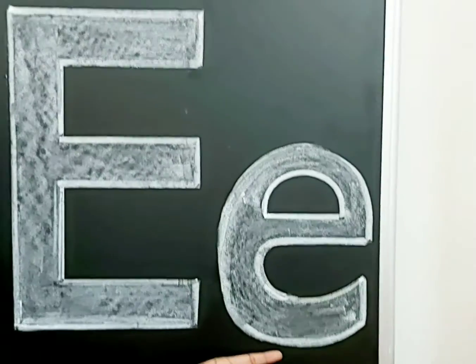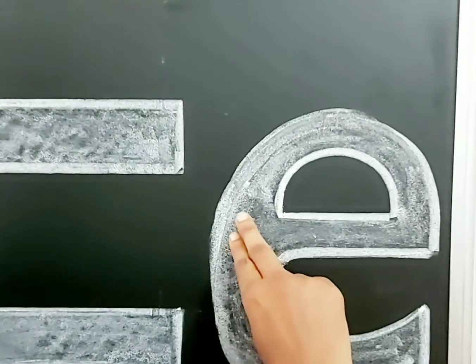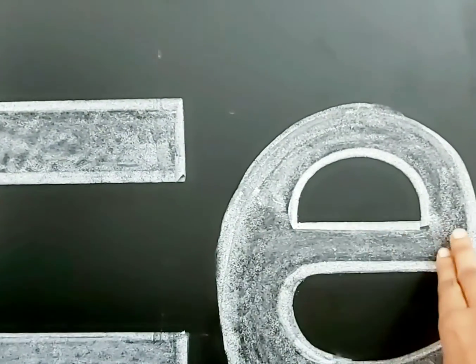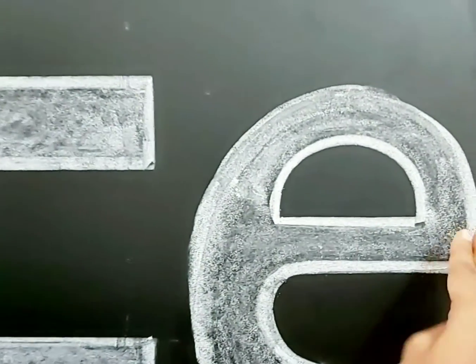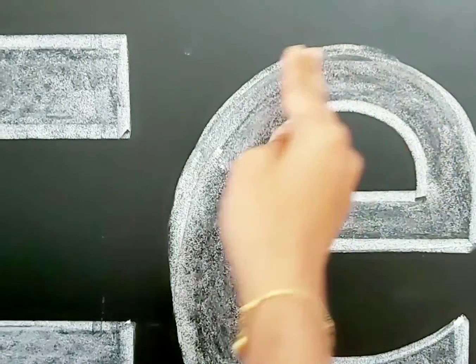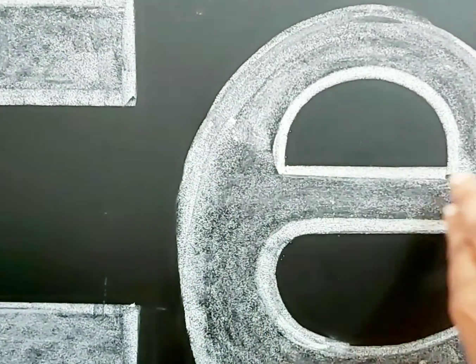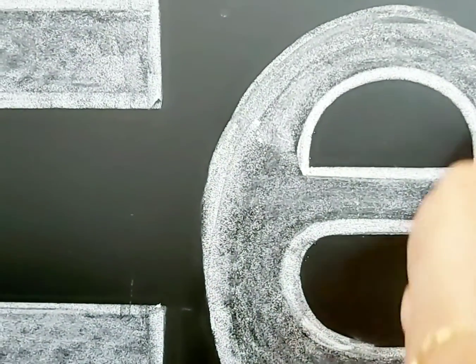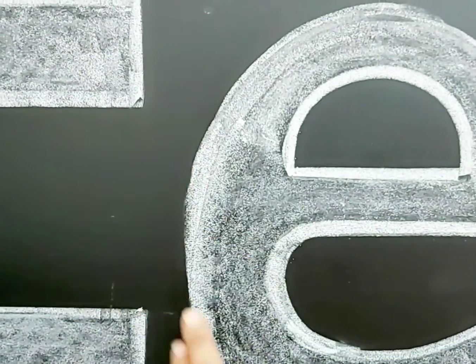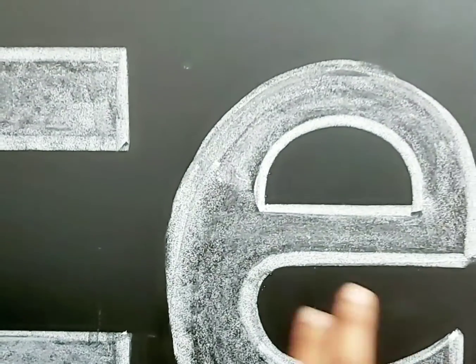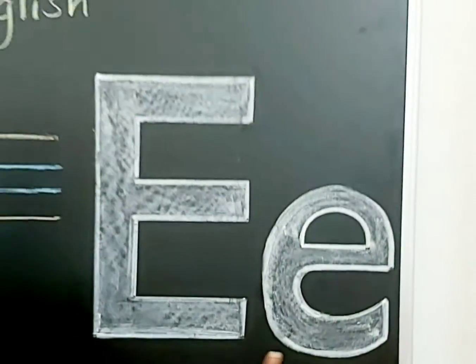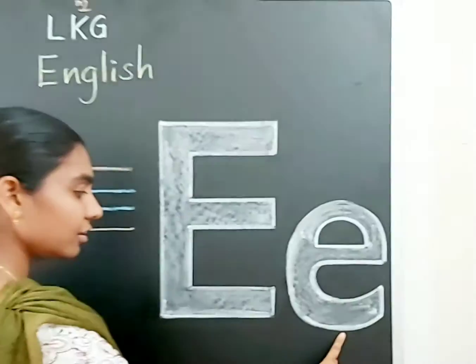Now we are going to trace small e. Small e: sleeping line, then a curve. Capital E and small e.